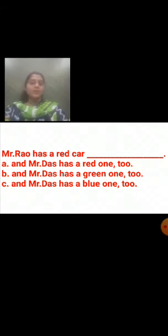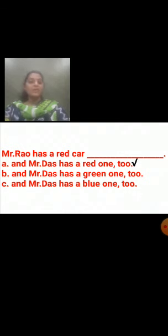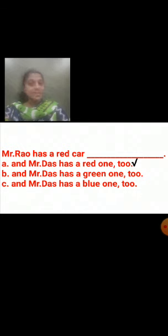So now which option is correct — A, B or C? Mr. Rao is having a red car, so Mr. Das must be having a red car. So which option is correct? Option A. How will you read the sentence now? Mr. Rao has a red car and Mr. Das has a red one too. So which option is correct? Option A.